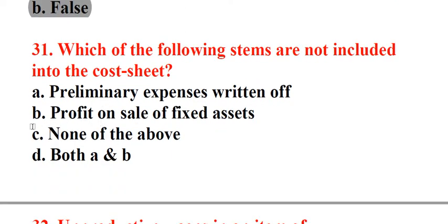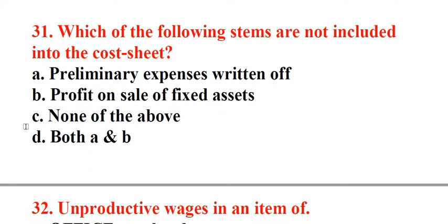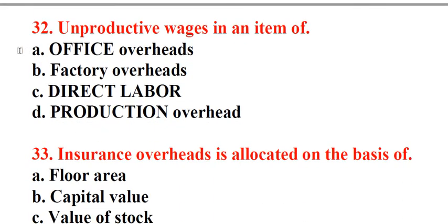Question 31: Which of the following items are not included into the cost sheet? A. Preliminary expenses written off, B. Profit on sale of fixed assets, C. None of the above, D. Both A and B. Answer: D. Both A and B. Question 32: Unproductive wages is an item of. A. Office overheads, B. Factory overheads, C. Direct labor, D. Production overhead. Answer: B. Factory overheads.